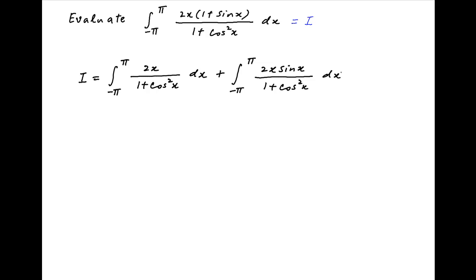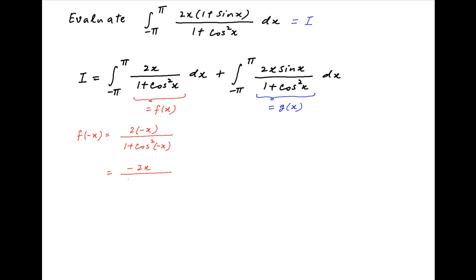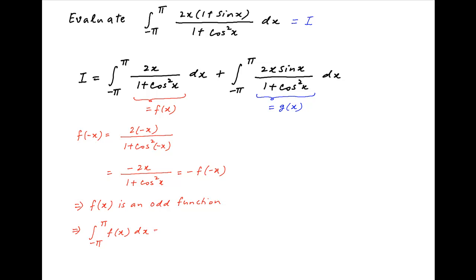Let's denote the integrand of the first integral by f(x), and the integrand of the second integral by g(x). Now f(-x) is equal to 2 times minus x divided by 1 plus cos squared(-x). Since cos(-x) equals cos x, we get f(-x) equals minus 2x upon 1 plus cos squared x, which is equal to minus f(x). In other words, f is an odd function, and therefore using properties of definite integrals, the integral from minus pi to pi of f(x) dx is equal to 0.